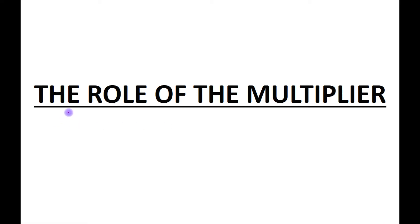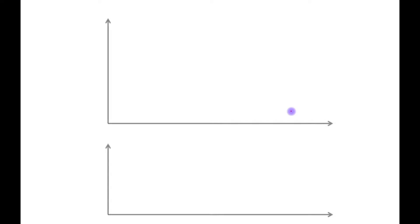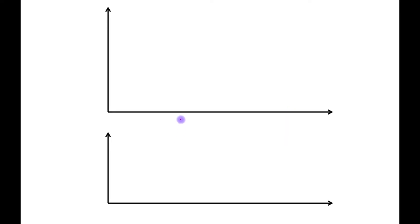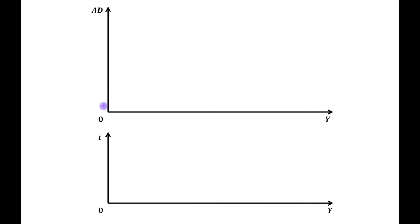The next topic is the role of the multiplier. Here we have two panels: the upper panel and the lower panel. In the upper panel, we have taken income or output on the horizontal axis and aggregate demand on the vertical axis, whereas in the lower panel, income or output is on the horizontal axis and interest rate is on the vertical axis.